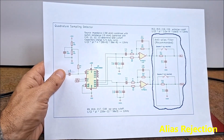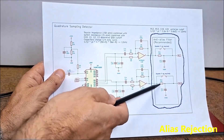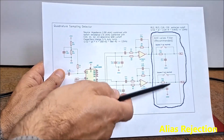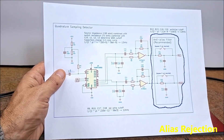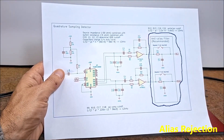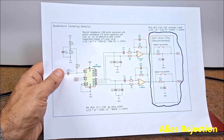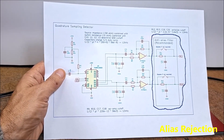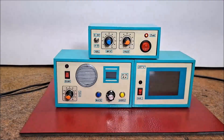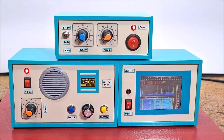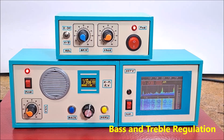The first improvement is the addition of another low-pass filter which consists of two resistors and two capacitors. This allows for a significant improvement in alias rejection.